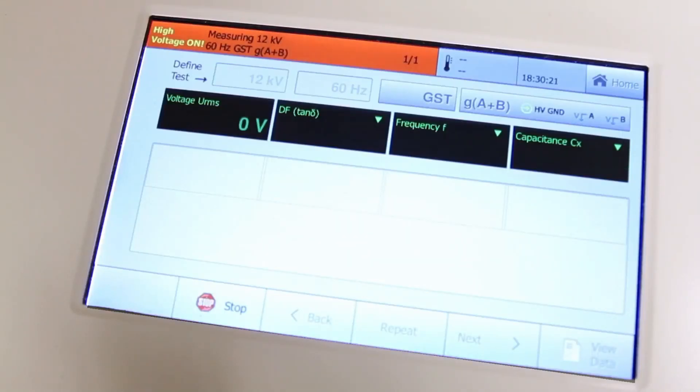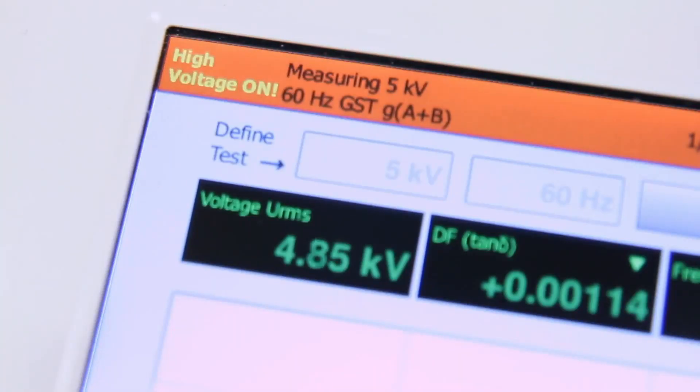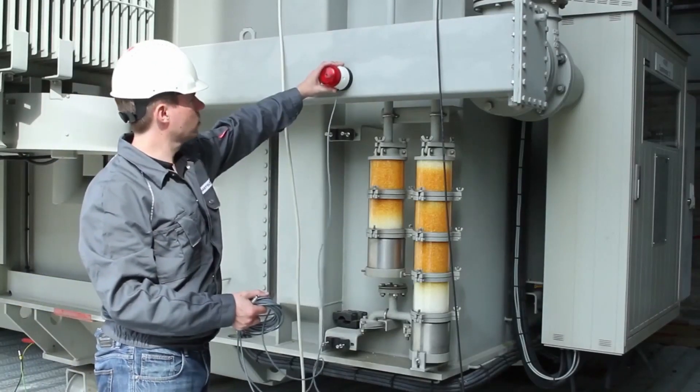For visual indication of high voltage, a warning bar is located on the top of the display screen, as well as an optional external strobe light.